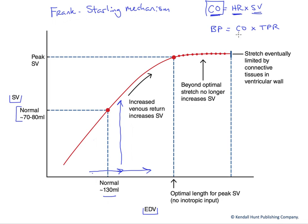As we can see, cardiac output is a component helping us regulate blood pressure — cardiac output times total peripheral resistance equals our blood pressure. So by enhancing blood volume, we increase stroke volume through the Frank-Starling mechanism, cardiac output goes up, and blood pressure goes up.